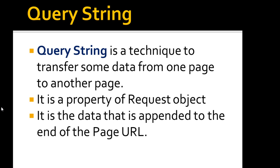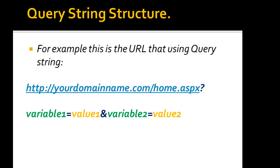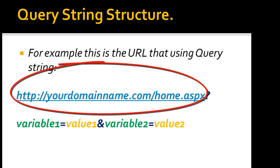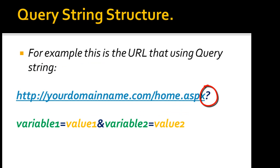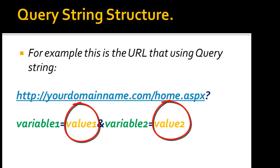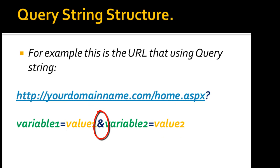Now let's understand the structure of a Query String. Query Strings are appended to the end of the URL. For example: http://yourdomain.com/home.asp — that is the URL of your page. After that, the Query String is appended following a question mark. Every parameter is mentioned after this question mark — variable1 and variable2 are the parameter names, and value1 and value2 are the values. If you want to use multiple parameters, you need to use an ampersand symbol.